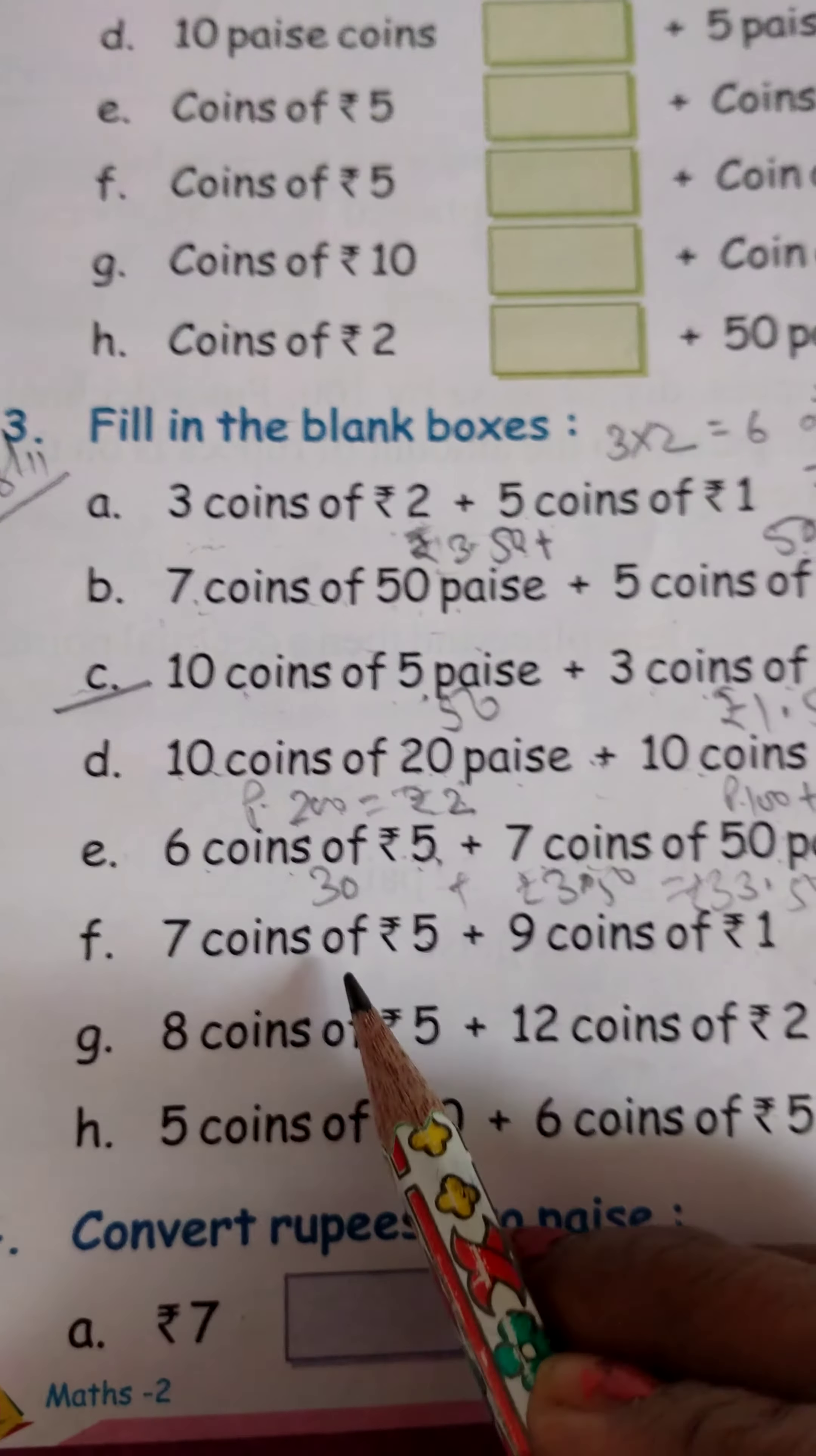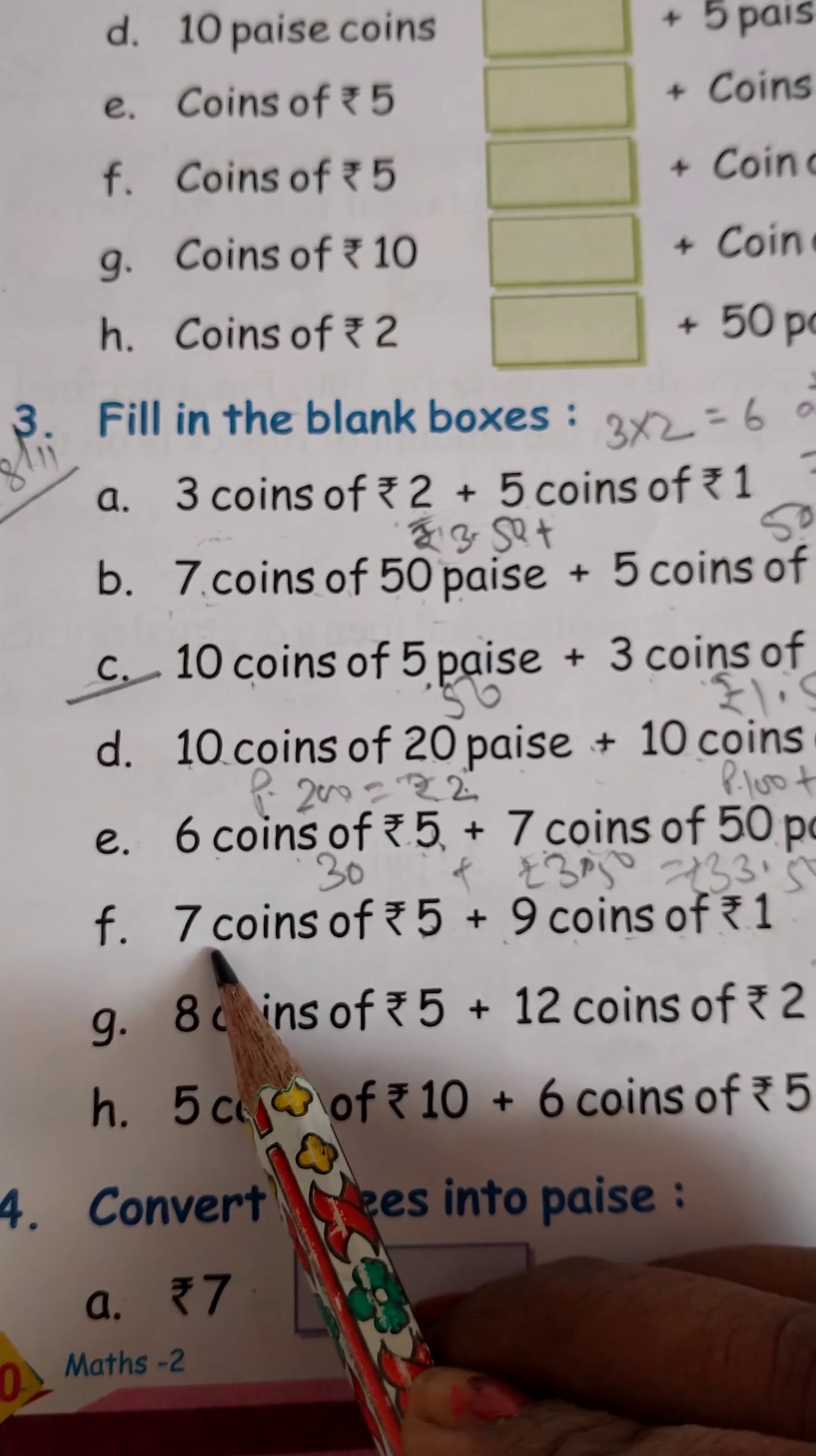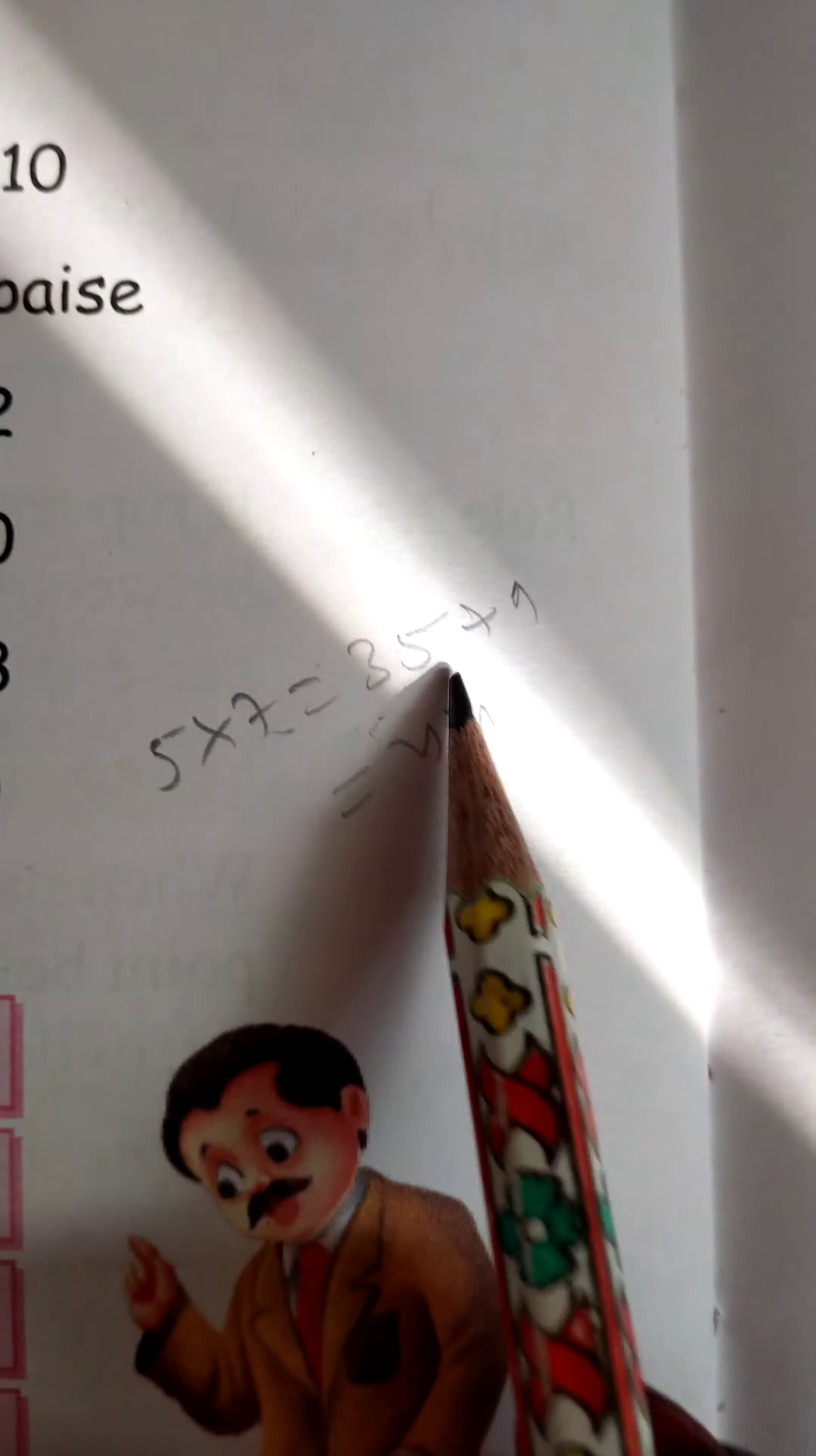Question number F: 7 coins of 5 rupees plus 9 coins of 1 rupee. So 7 coins of 5 rupees, 7 multiplied by 5 equals 35.